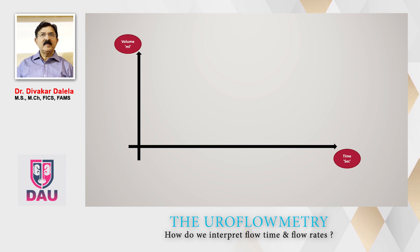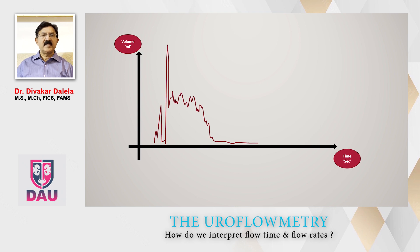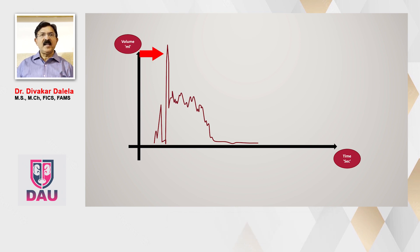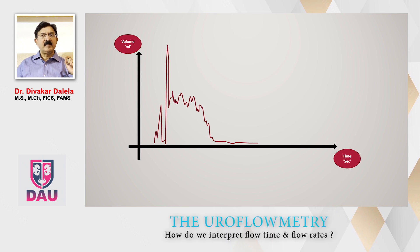To give you an example: a patient passed urine and you notice a peak at the beginning. This sudden spike has come either because of a cough, a sneeze, or shaking of the flowmeter machine. The machine will report Q-max as 30 ml per second, but you know this is fallacious. The graph should actually be read as shown by the green line. So this Q-max is fallacious.